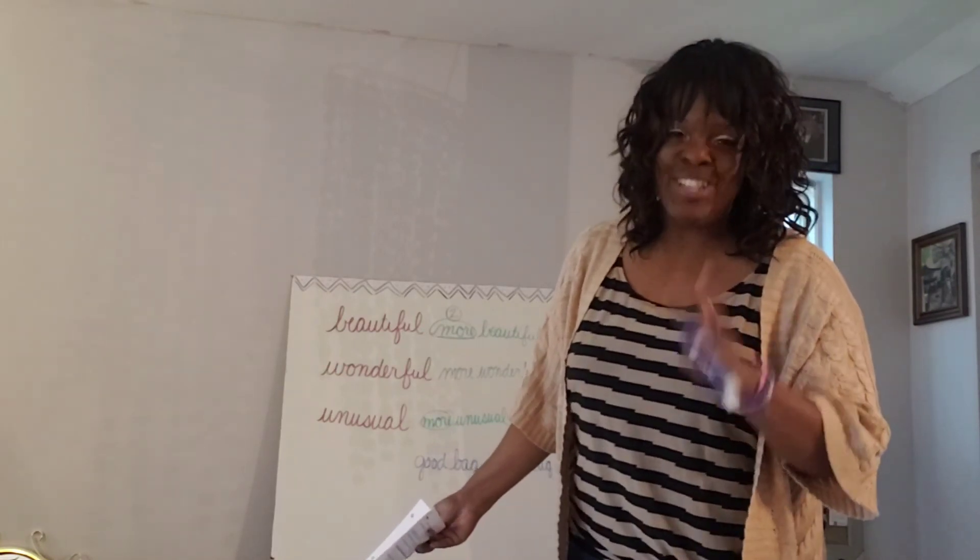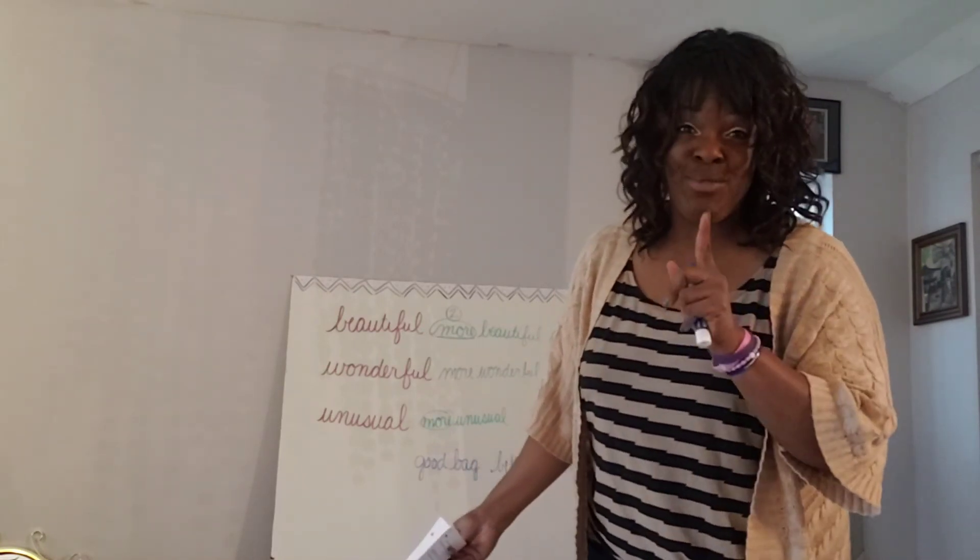I'm going to stop here because this video is already long enough. To summarize: for smaller words, we use -er and -est; for longer words like beautiful, wonderful, and unusual, we use 'more' and 'most.' For good, it's good, better, best. For bad, it's bad, worse, worst. I know you can figure those out — speak smart! See you soon.